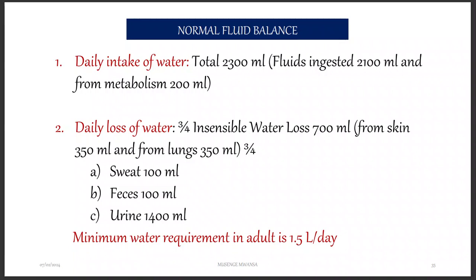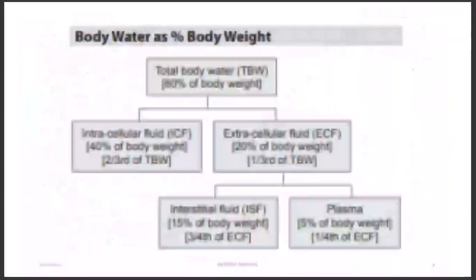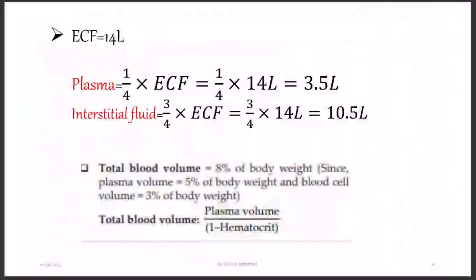We had already talked about the different body compartments — ECF and ICF. ECF can be divided into interstitial fluid, transcellular fluid, and plasma. Just a quick recap with some numbers: ECF is 14 liters — the fluid in our bodies not in the cells — while the fluid inside the cells, ICF, is 28 liters.